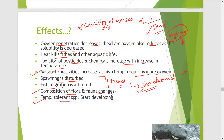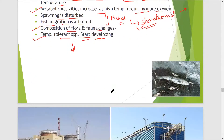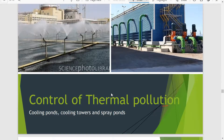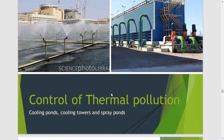Fishes are stenothermal organisms — very sensitive to temperature change. The composition of fauna and flora can change because of changing water temperature, and temperature-tolerant species will start developing while temperature-sensitive species will not survive. To control thermal pollution, before discharging heated water from power plants into the main water body, we can use cooling ponds, cooling towers, and spray ponds to reduce water temperature.